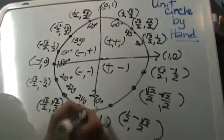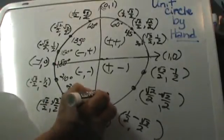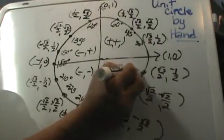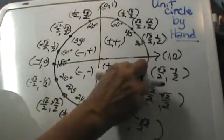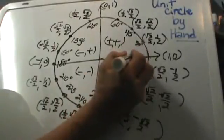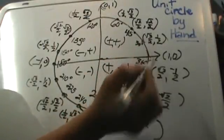And then this one increases by 30, and then again by 30, so that's 300. So that's 315. And of course all the way around the circle is 360 degrees.